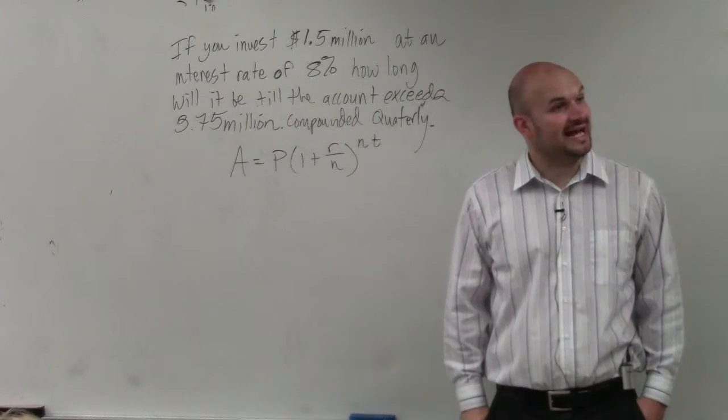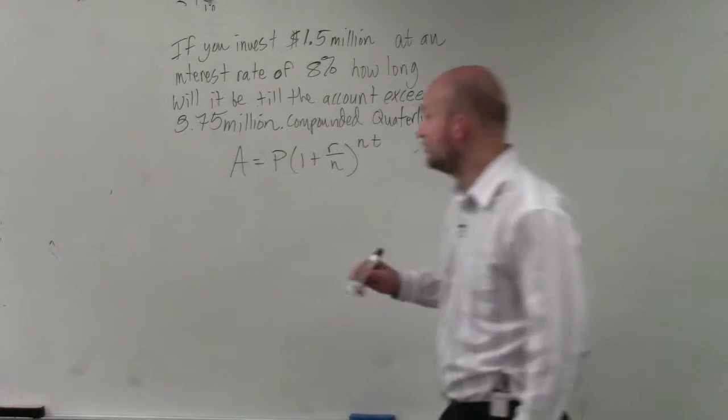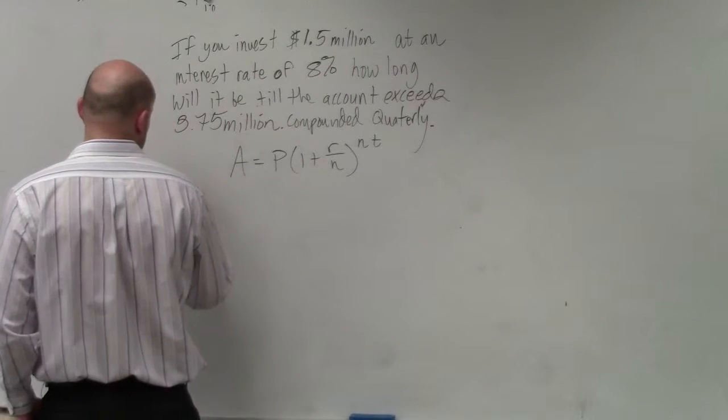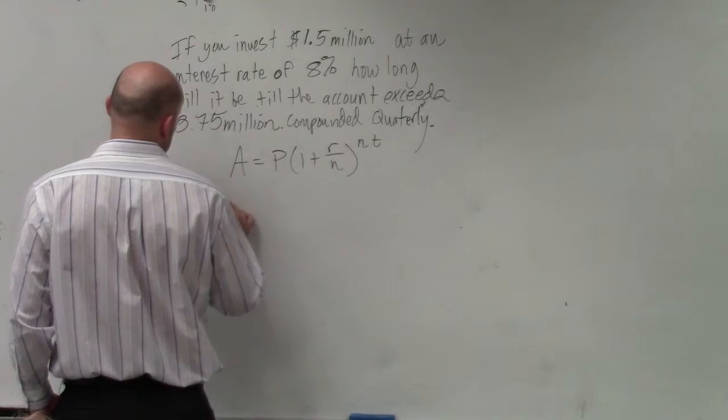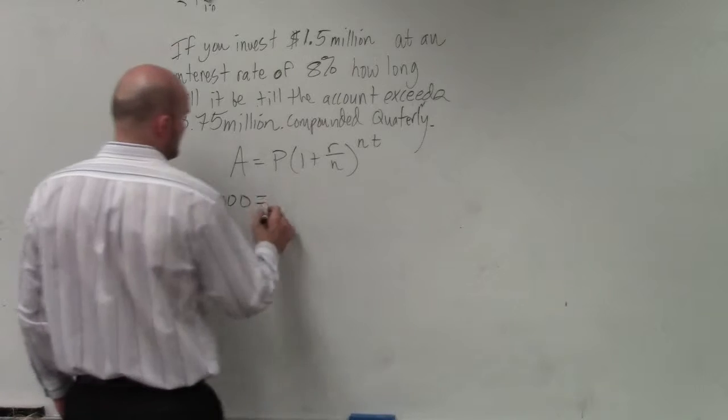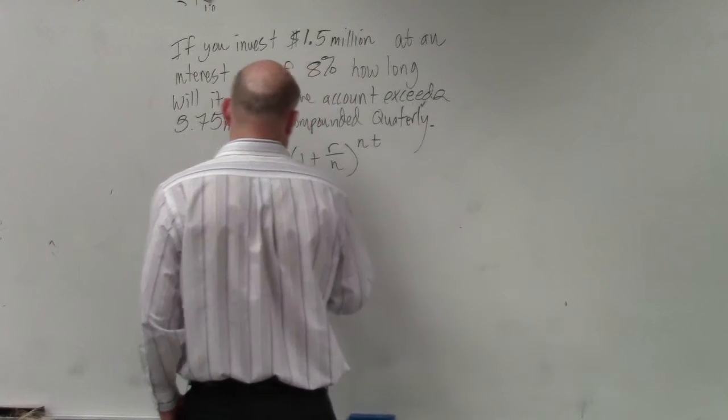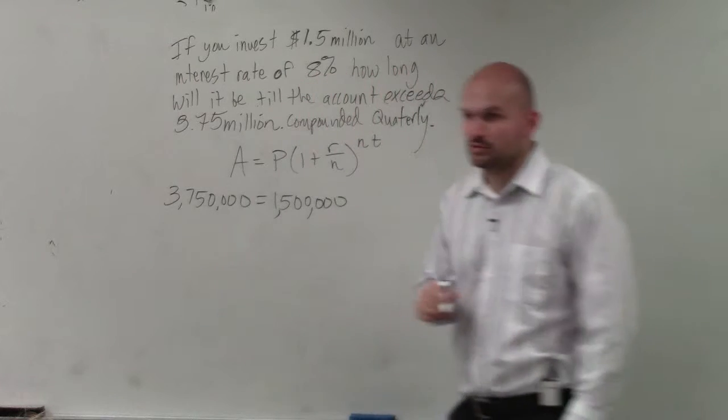All right, so remember, A represents our future value. So that's going to be 3.75 million. 1.5 million is our principal.